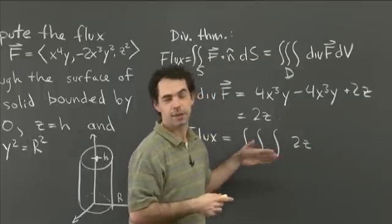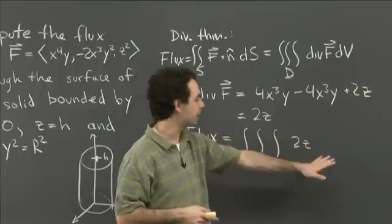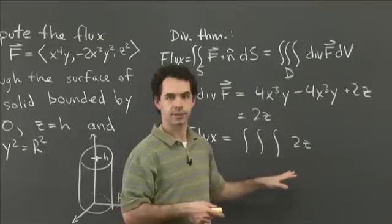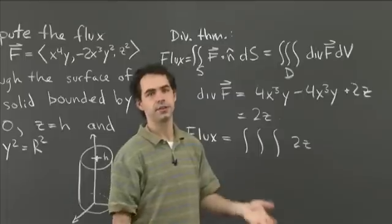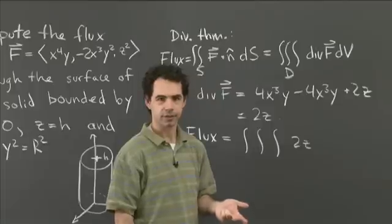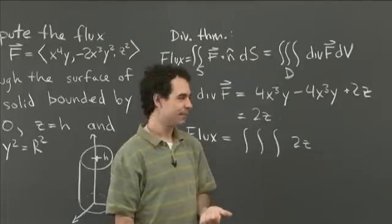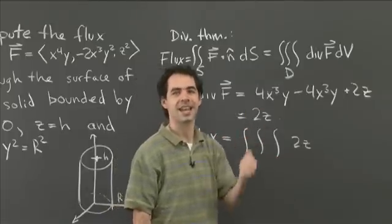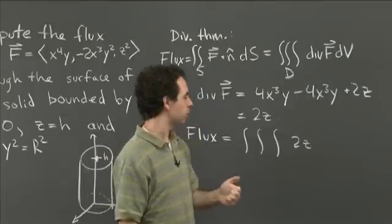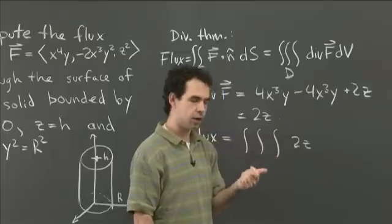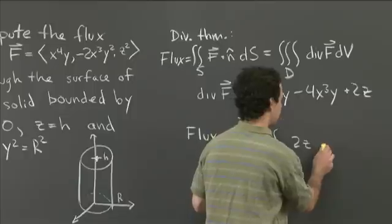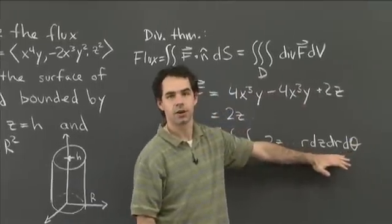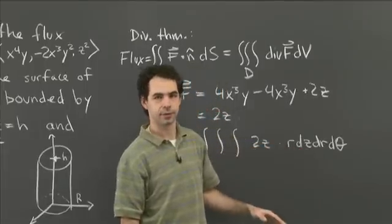We have three natural choices: rectangular, cylindrical, and spherical coordinates. Spherical seems clearly inappropriate. Rectangular isn't horrible, but this is a cylinder, so it's crying out for cylindrical coordinates. In cylindrical coordinates, dV becomes r dz dr dθ — remember that extra factor of r. So we have the integral of 2z times r dz dr dθ.